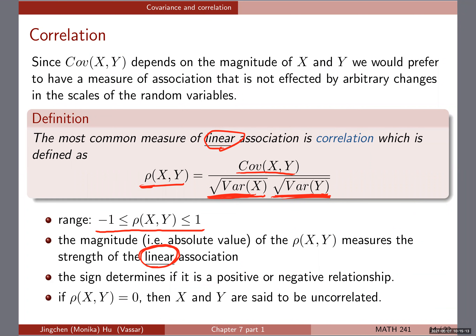The absolute value of rho measures the strength of the linear relationship, and the sign — positive or negative — denotes whether it's a positive or negative relationship. If rho equals zero, we say they are uncorrelated. If rho equals one, it is very strongly positively correlated. If rho equals negative one, that is a strong negative relationship. But you could have all kinds of rho values — it is bounded below by negative one and above by positive one.